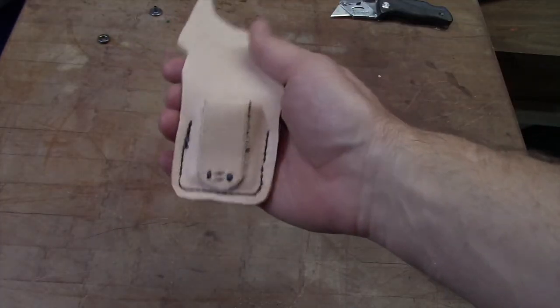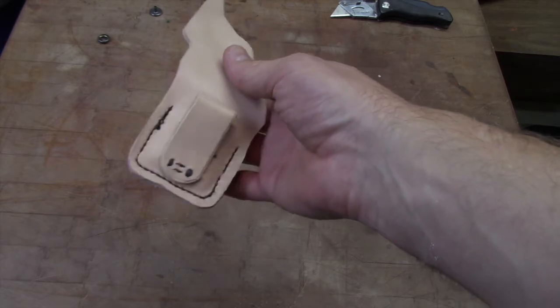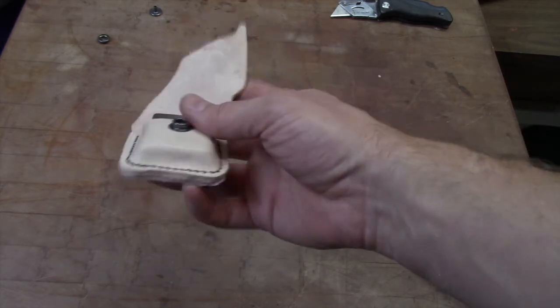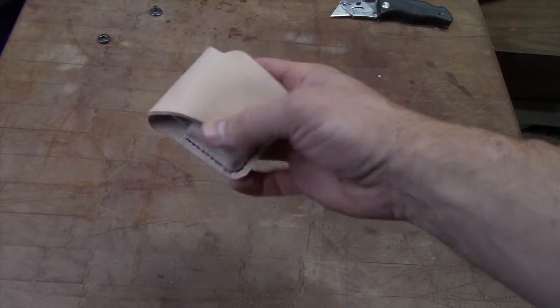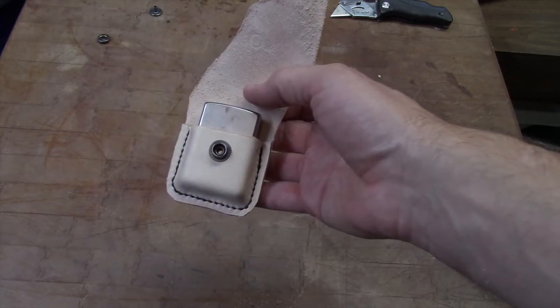We've trimmed everything up and now it's time to work on the top flap. Basically, what I'm going to do is flip this over here, figure out where I want my top snap to go, and then we'll trim everything down.